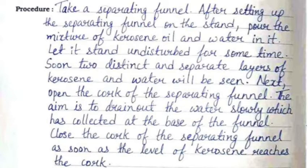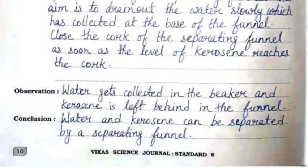Next, open the cork of the separating funnel. Drain out the water slowly, which has collected at the base of the funnel. Close the cork as soon as the level of kerosene reaches the cork. The observation is: water gets collected in the beaker and kerosene is left behind in the funnel.